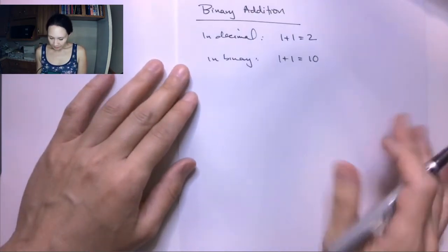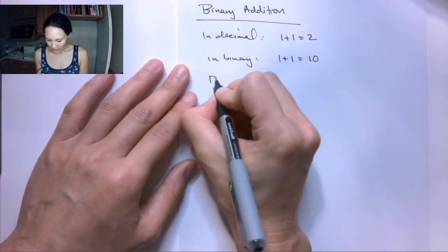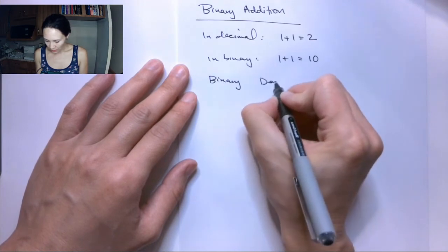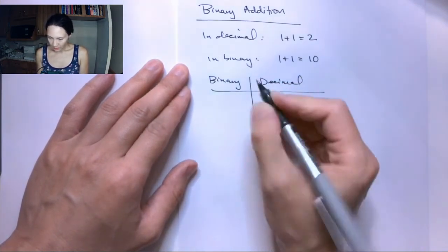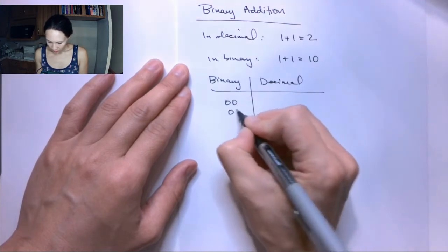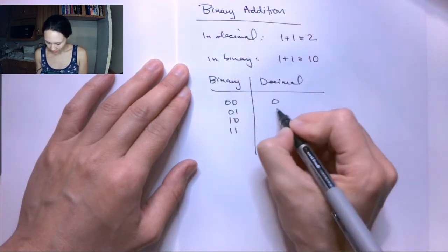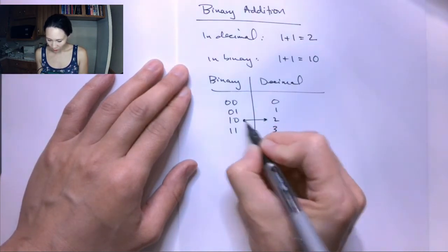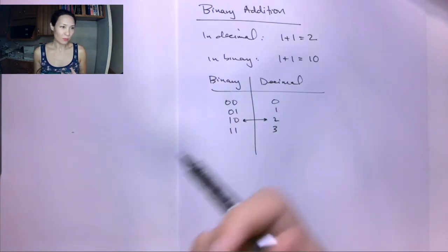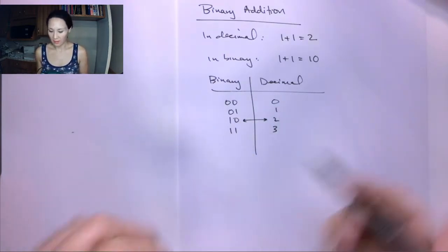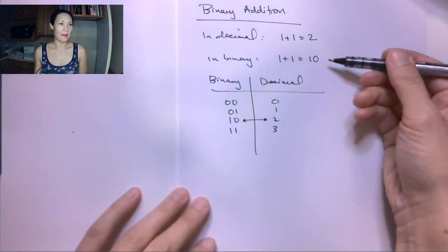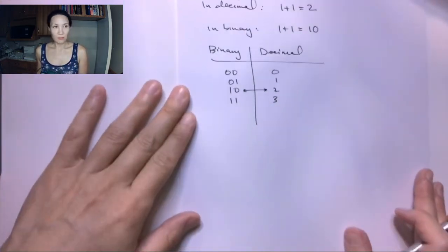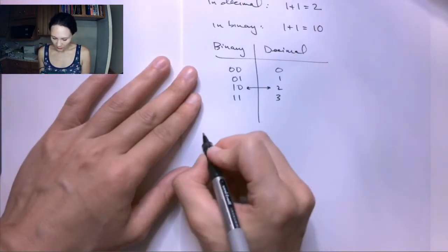It might be handy to have a decoding table while you're starting these. If we write out some binary numbers — 0, 1, 2, 3 — we see clearly that 1, 0 is indeed equal to 2. And then we feel comfortable and we can move on. But just looking at it, this is new and takes a little getting used to. So let me give you some basic rules to get you started.